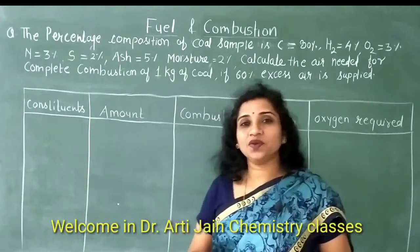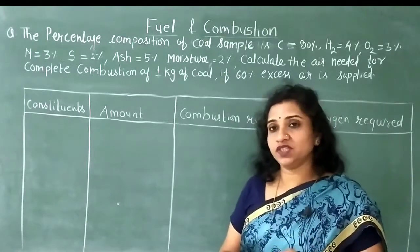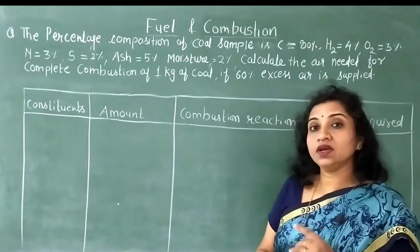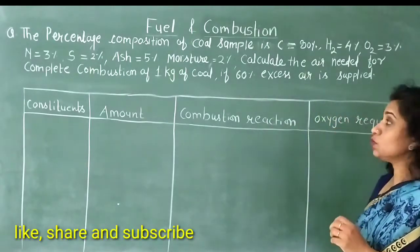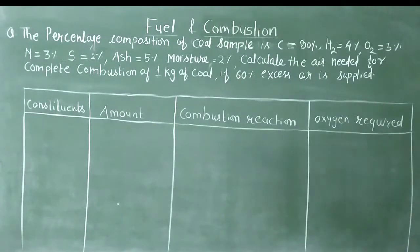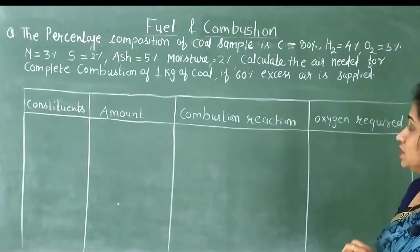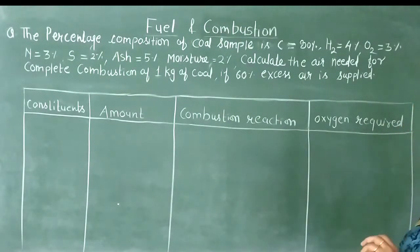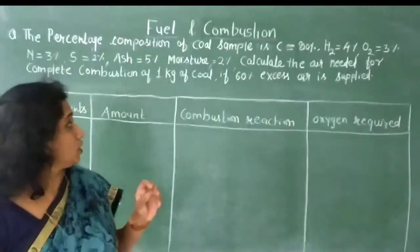A very good morning dear students. Today we will discuss the next numerical based on fuel and combustion by weight — air needed by weight. The percentage composition of a coal sample is: Carbon 80%, Hydrogen 4%, Oxygen 3%, Nitrogen 3%, Sulfur 2%, Ash 5%, Moisture 2%. Calculate the air needed for complete combustion of 1 kg of coal.